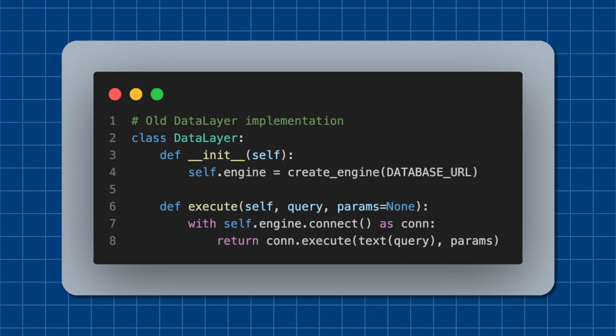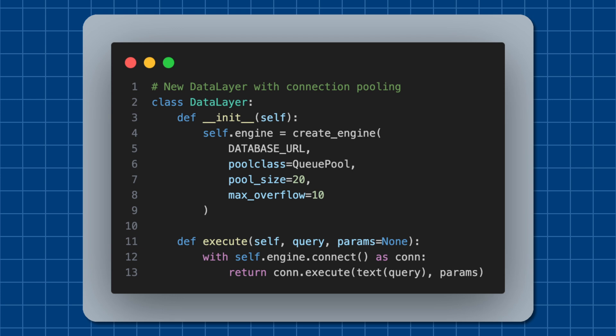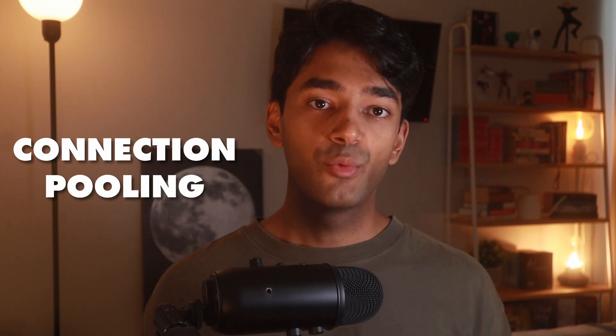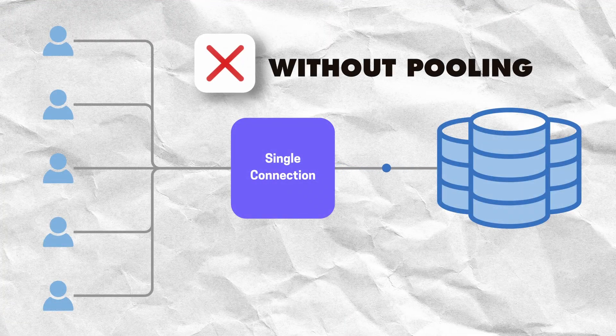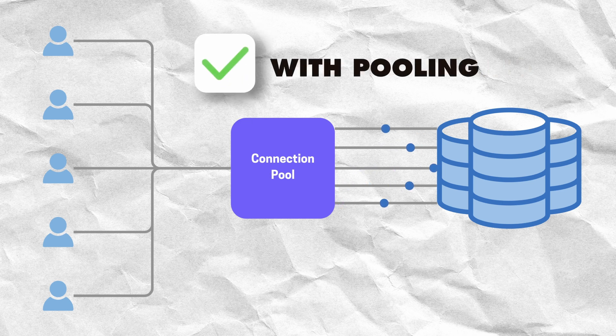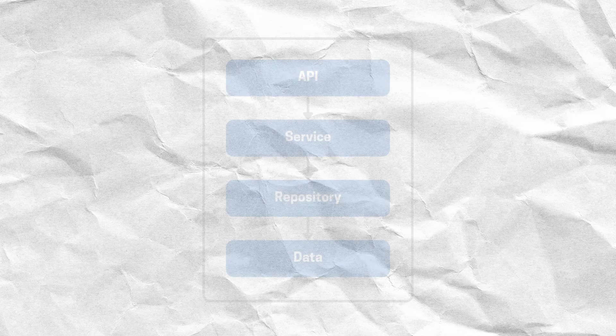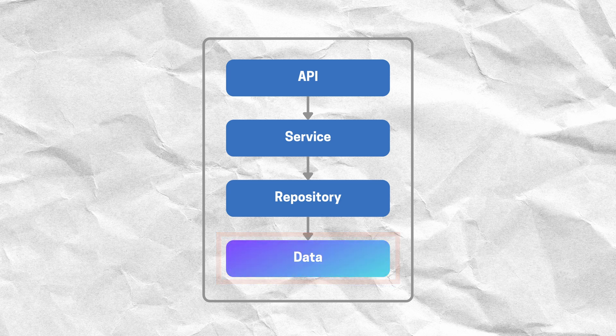Let's say my video processing app takes off and suddenly we're handling a hundred times more users than before. Because of this increased traffic, I start seeing database connection errors because we're hitting Postgres connection limits. With my layered architecture, I can change my data layer's implementation to use connection pooling, which now allows my application to handle more concurrent requests. Instead of creating and closing database connections for every request, I can maintain a pool of 20 connections that can be reused, with the ability to create 10 more during traffic spikes. Because of the layered architecture, this change remains isolated to the data layer, meaning no other parts of my application need to be updated at all.